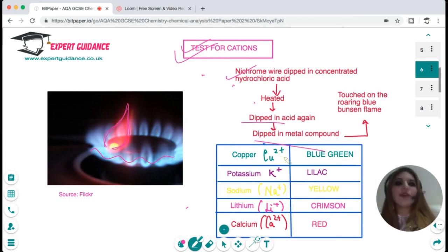The color of the flame is characteristic of a metal. For example, copper ion produces a blue-green flame, potassium K+ produces a lilac flame, sodium produces a yellow flame, lithium produces a crimson flame, and calcium produces a red flame. You should remember these ions.